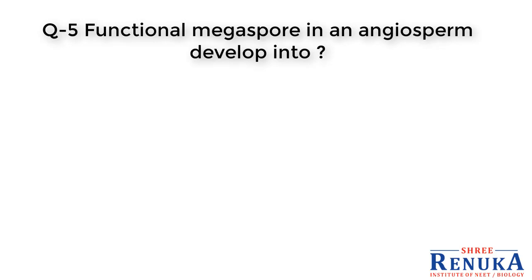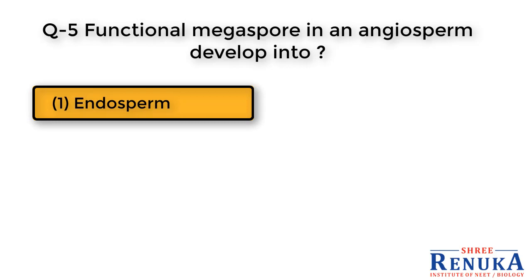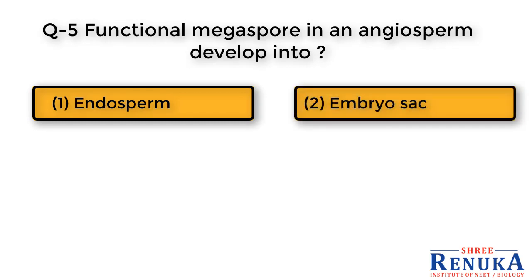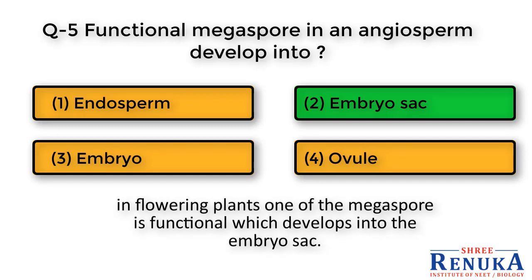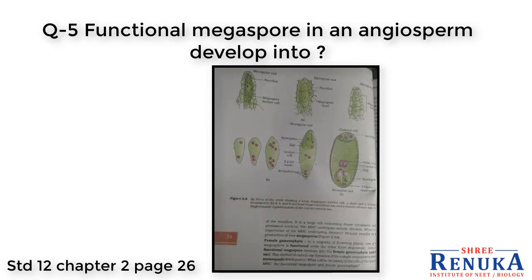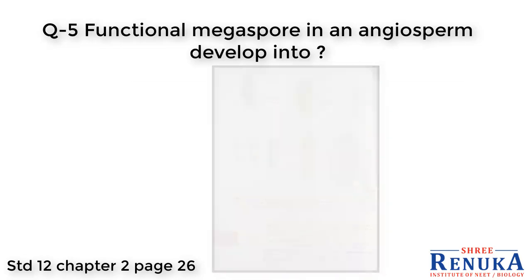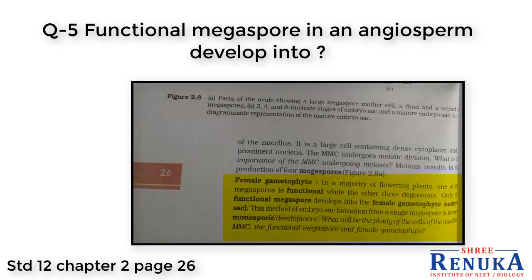Question 5: A functional megaspore in an angiosperm develops into — options: 1. Endosperm, 2. Embryo sac, 3. Embryo, 4. Ovule. The answer is 2nd, embryo sac. In flowering plants, one of the megaspores is functional and develops into the embryo sac. This is stated in Class 12, Chapter 2, page 26 of the NCERT textbook.